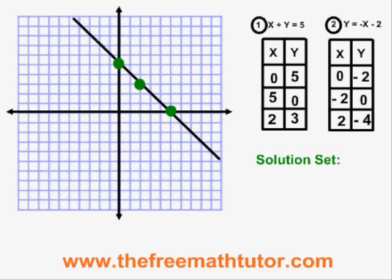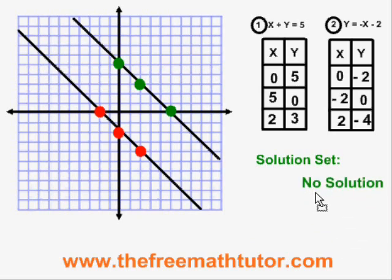With equation two, I am putting points at these coordinates. Now we can see that these lines are parallel and therefore, the solution set is no solution. When asked for the type of lines, we give the answer parallel lines.